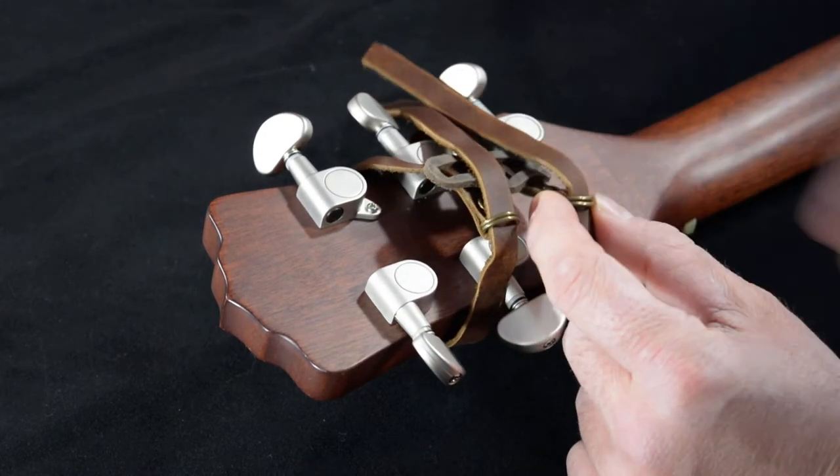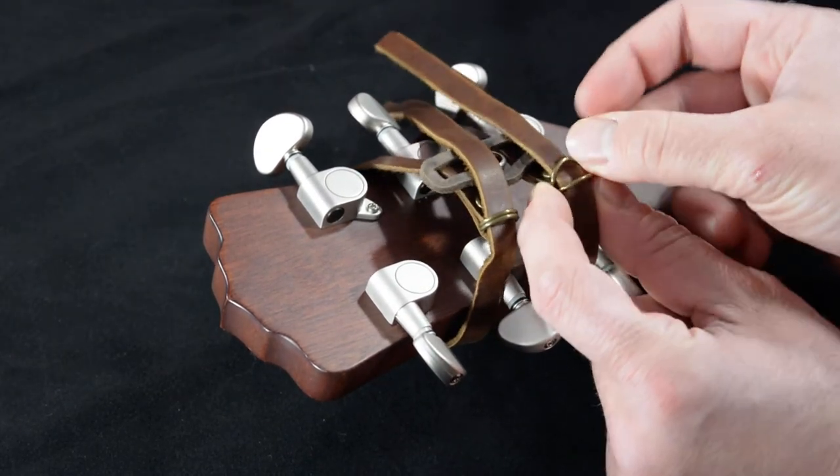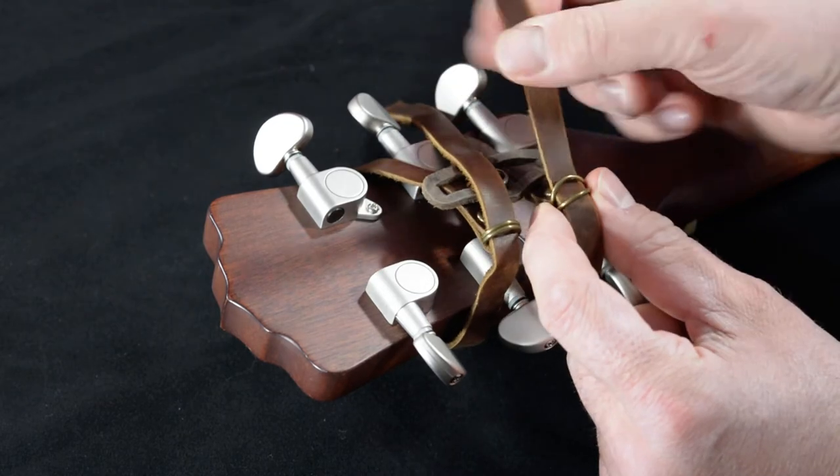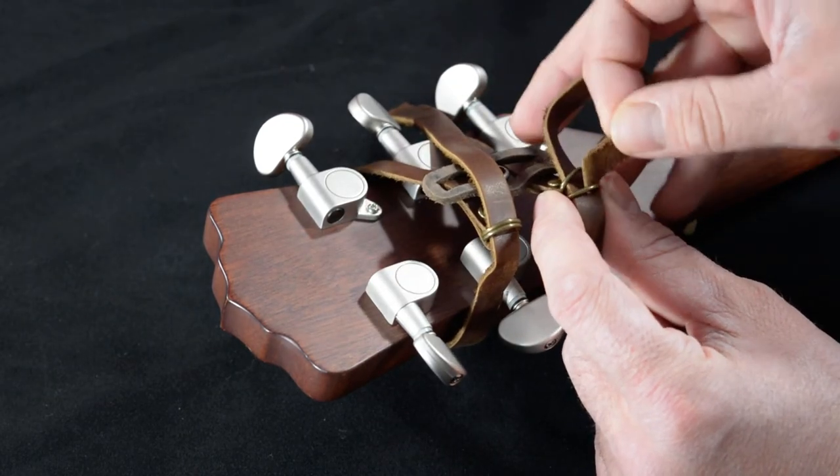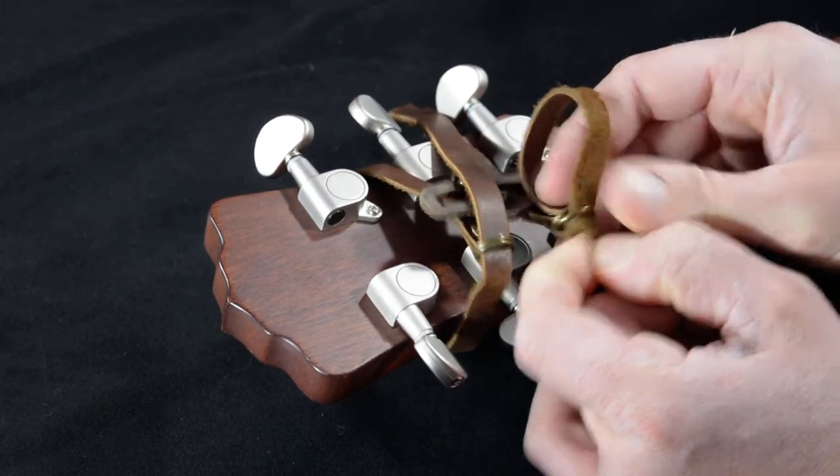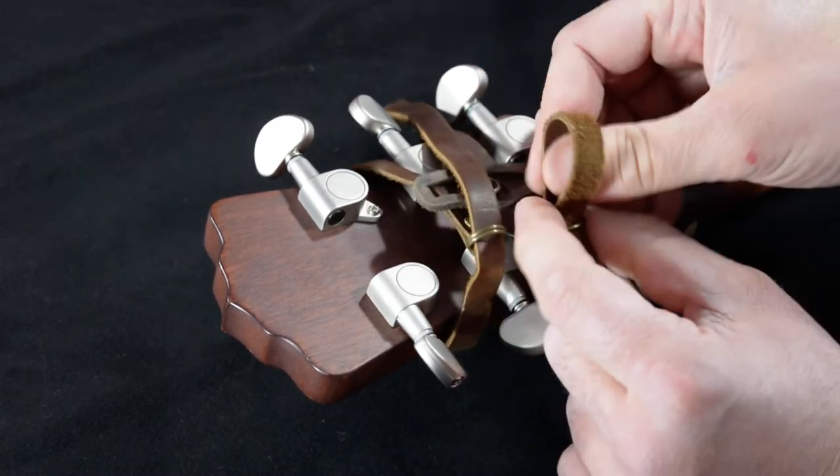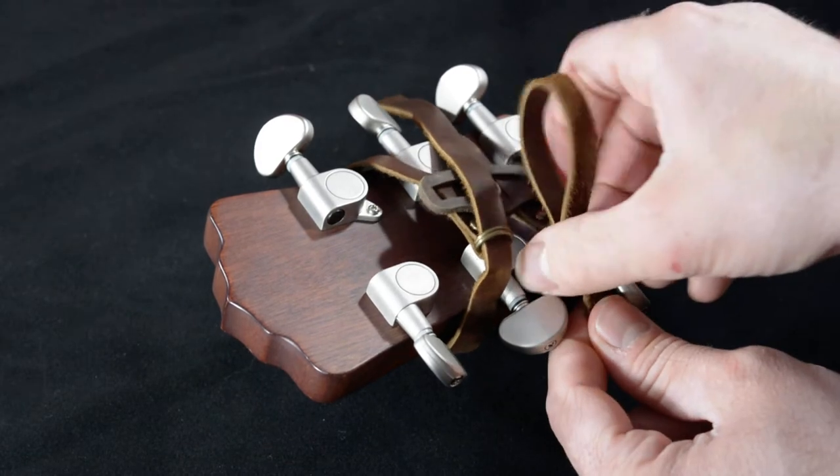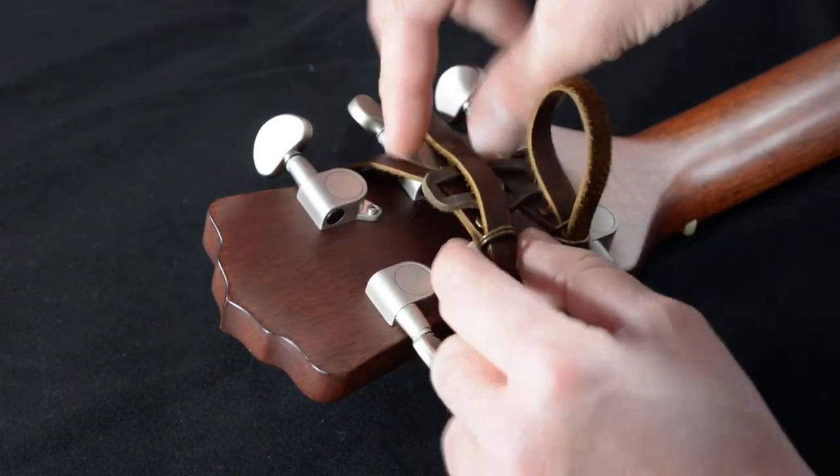Now, keep it loose. Now, we're going to double back. So, we're going to take the strap. We're going to go back over the first one, under the second one. Great. Now, keep this loose. Haven't tightened it yet. I'll do that with the other side.